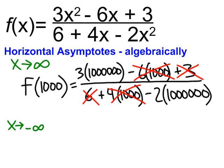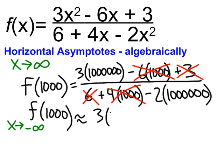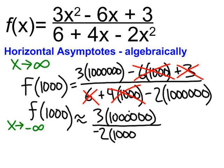Now that I've crossed those out, I want to acknowledge that they do contribute a little bit, but not a lot. So f(1,000) approximately equals 3 million on the top, all over negative 2 million on the bottom. I can just cross the million on top and the million on bottom out, and I'm left with negative 3 halves.